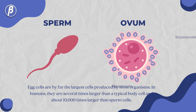Egg cells are by far the largest cells produced by most organisms. In humans, they are several times larger than a typical body cell, and about 10,000 times larger than sperm cells.